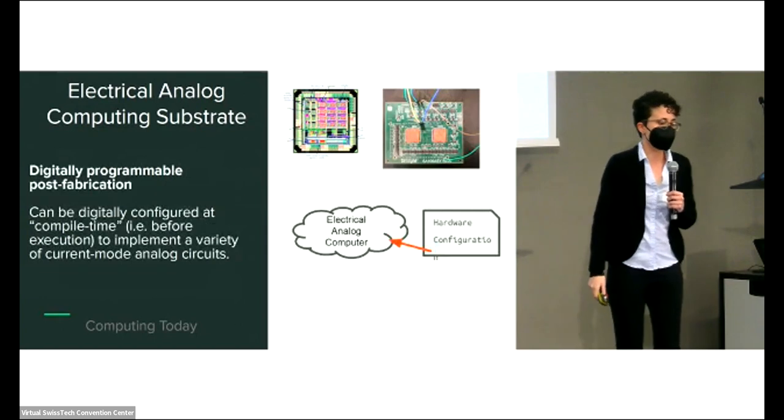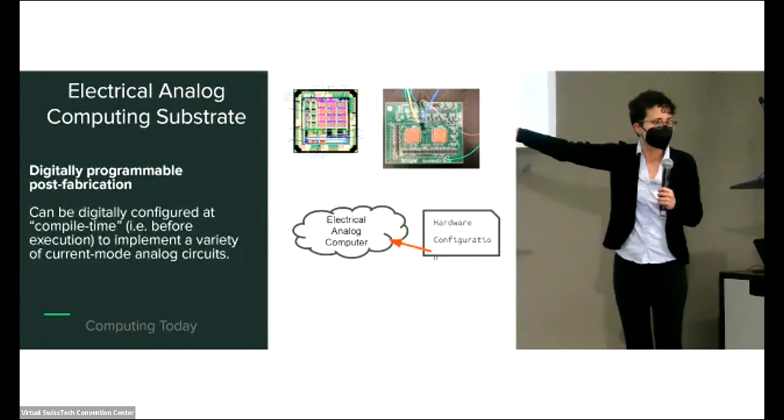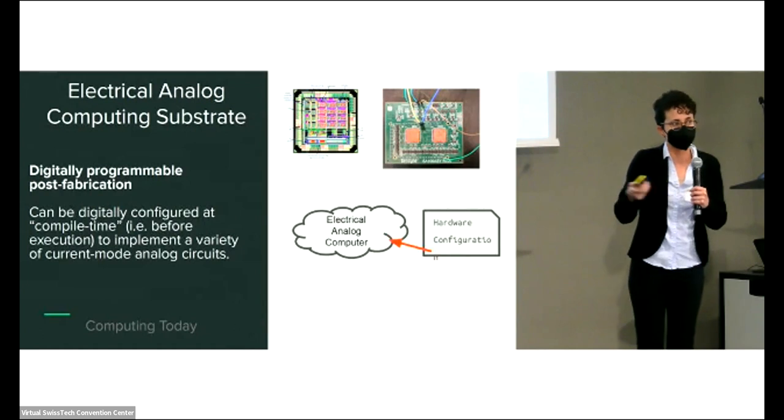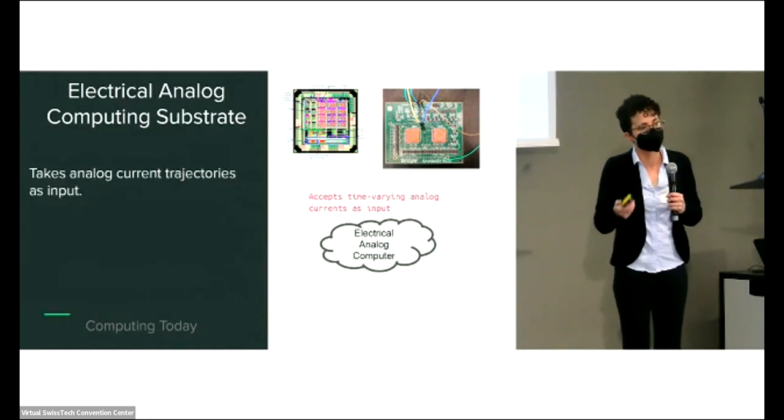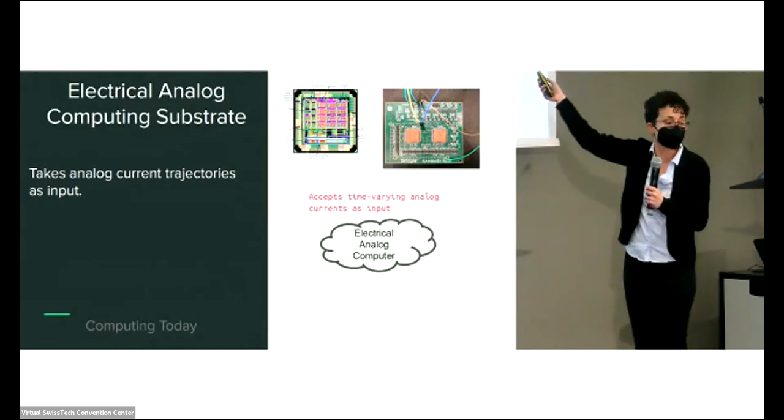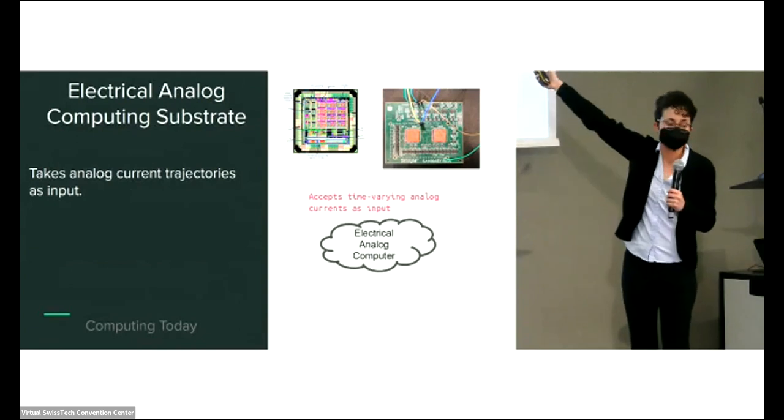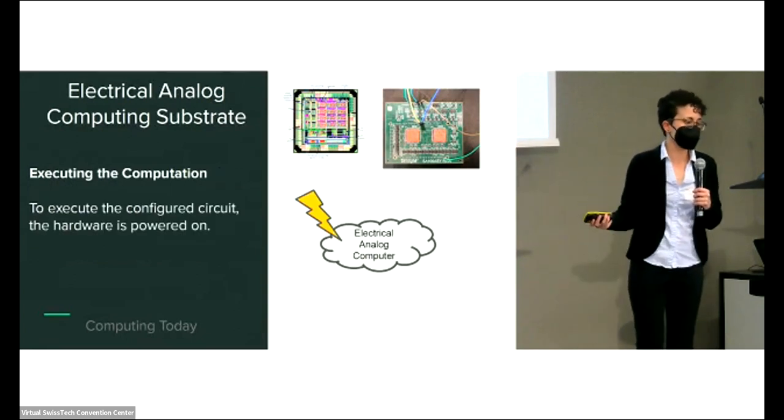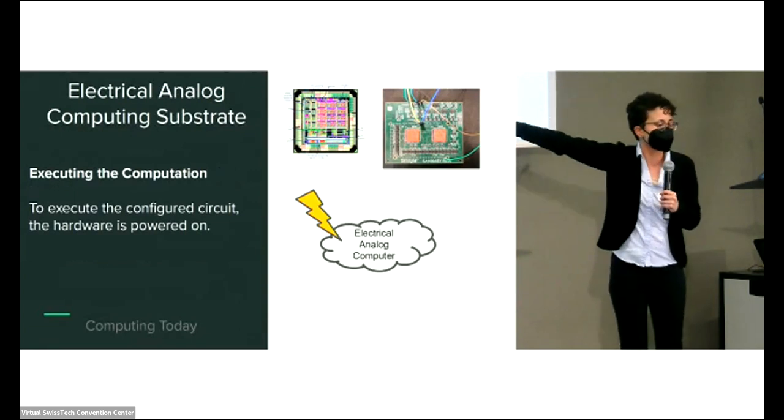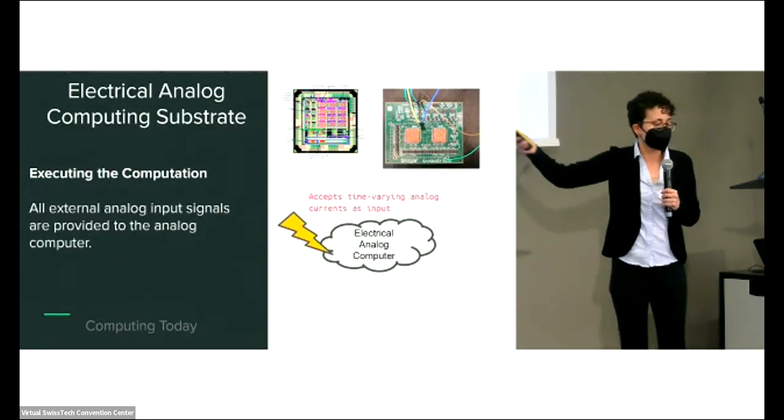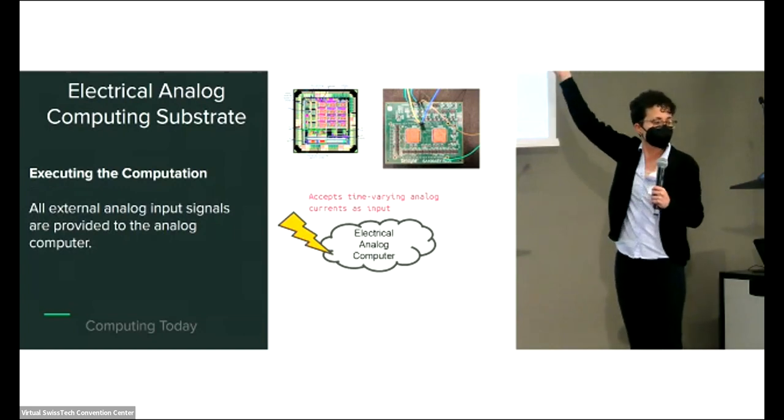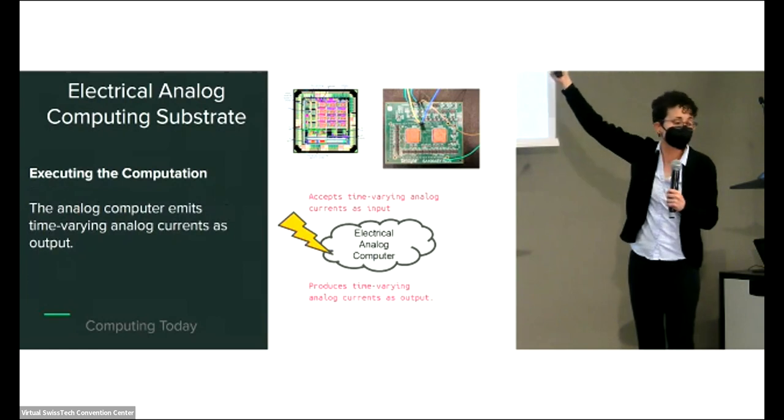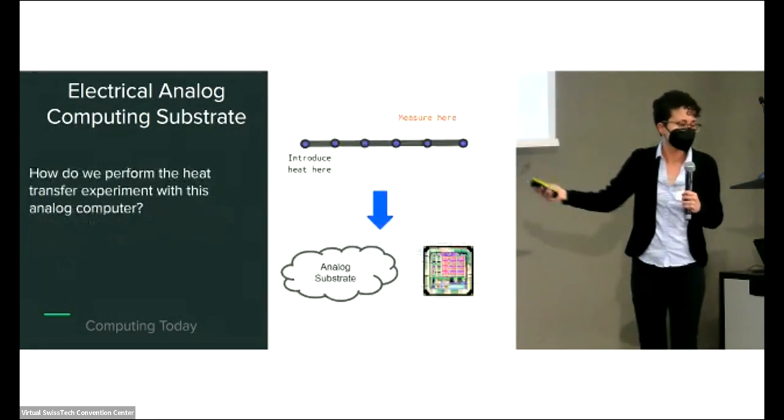We introduce heat into the system by adding this external forcing function g(t), which is a function of time. You might imagine g(t) might look like a pulse you provide at the beginning that models introducing heat at the leftmost point. Let's talk about how we map this computation onto analog substrate. Enter the electrical analog computer. This is a silicon CMOS computer that leverages the analog behavior of transistors.